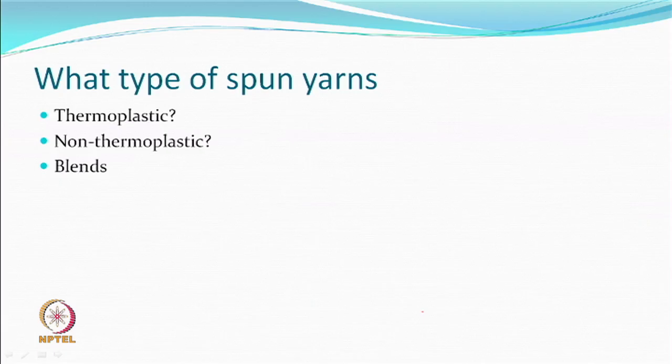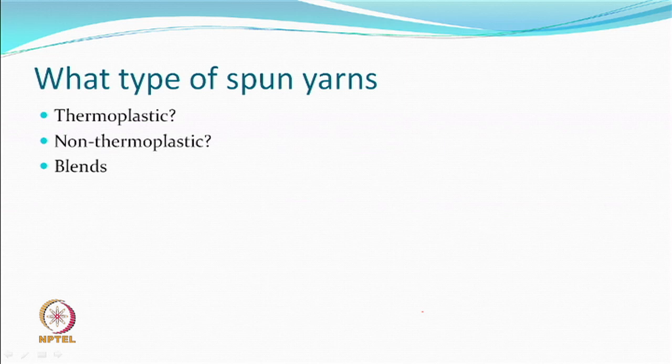Spun yarns are available of all types — thermoplastic ones like polyesters and polypropylenes, and non-thermoplastic ones such as natural fibres. There is also the possibility of texturizing these materials. Yarns are also available as blends — polyester-viscose, polyester-cotton type blends. You have another opportunity created where either the thermoplastic nature could be used in blends, or mechanisms can be used to set the non-thermoplastic part as well.